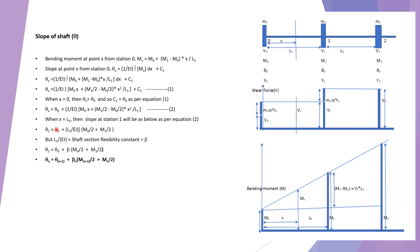Here L1/EI is called the shaft section flexibility constant, denoted as beta (β). So we can write: θ1 = θ0 + β·(m0/2 + m1/2). In general, the slope at station n is: θn = θ(n−1) + βn·(m(n−1)/2 + mn/2). This is the general expression for slope.